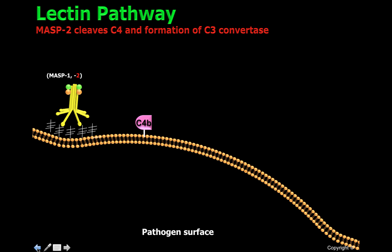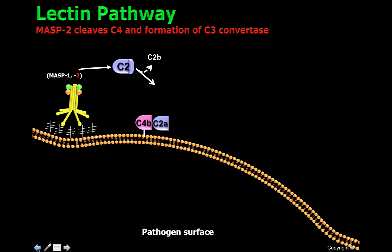MASP2 also has the capacity to clip C2, forming C2B and C2A. If C2A is close enough to a prebound C4B, it will generate a complex called C3-convertase, or C4B-C2A.